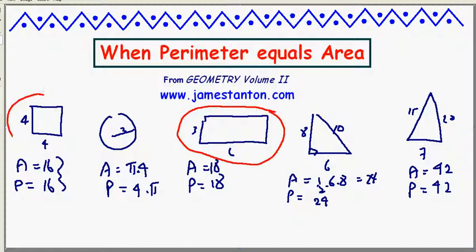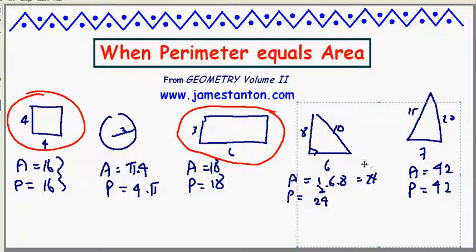Is there another rectangle, we've got two here, with integer side lengths with the property that area equals perimeter? Well, the answer is no, and this is it. These two are it.